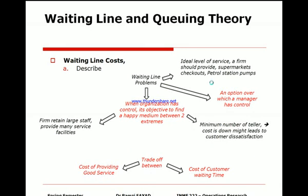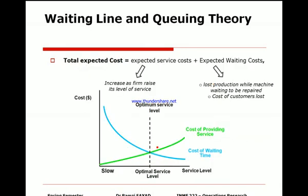Back to the supermarket example: as the operations manager, we have a graph showing total cost. The service level cost — shown in green — increases as more people are hired on the checkout, because better service costs more money. At the same time, the cost of waiting time, which is equivalent to dissatisfaction cost, represents loss of goodwill — people will stop coming to the supermarket a second time.